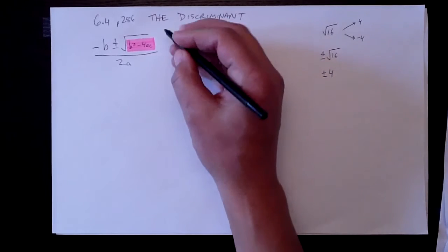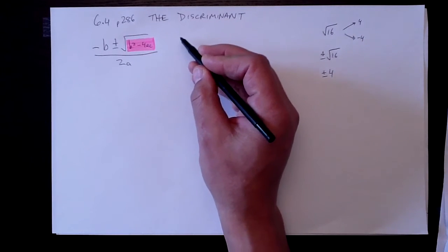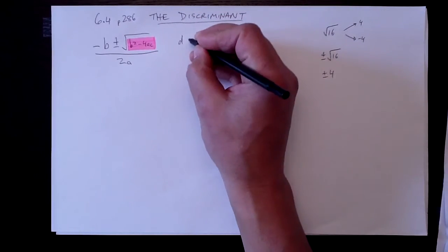So we could actually set up some rules here. Let's just give this a name, this thing in pink here. Why don't we call it the discriminant? Yeah, let's call it the discriminant. And d, we'll make that stand for the discriminant.